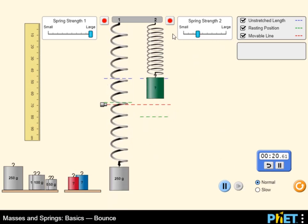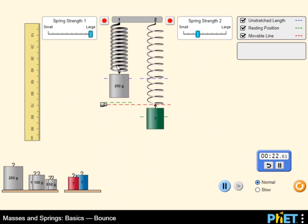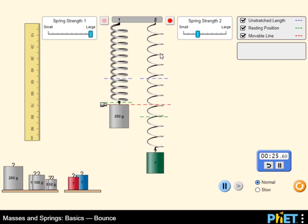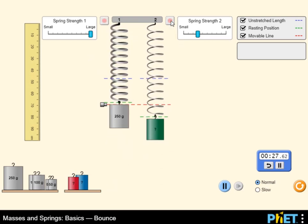Simultaneously experiment with two mass spring systems to make qualitative comparisons. You can test the spring strength with different masses.